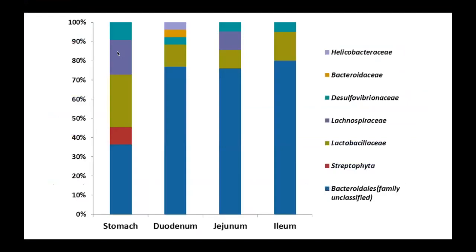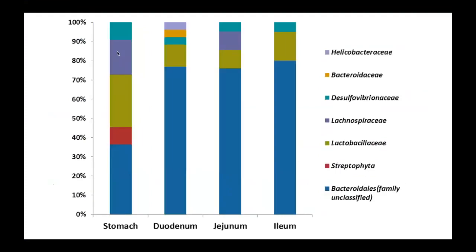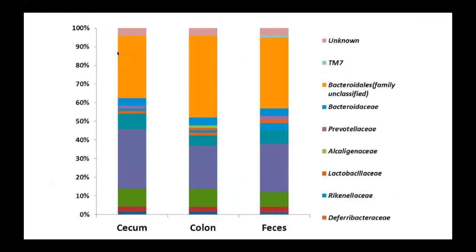The first figure from the mouse study shows composition at different sites — stomach, duodenum, jejunum, and ileum — which are fairly consistent from compartment to compartment in the upper GI tract. By contrast, the large intestine results for cecum, colon, and feces show a dramatically different microbial composition. There's a lot of consistency in the upper GI tract that contrasts pretty significantly with what we see in the lower GI tract.